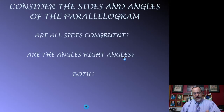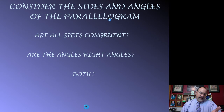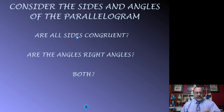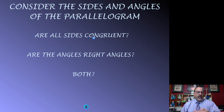If the answer to the angles question is no, then it's simply a parallelogram. So if the answer to the sides question is no but yes to the angles question, then it is a rectangle. If it's no to the angles question but yes to the sides question, then it's a rhombus. You can have one of these answers be yes and the other one be no.